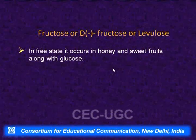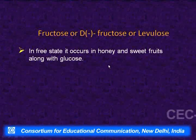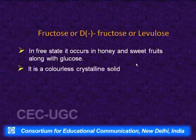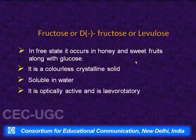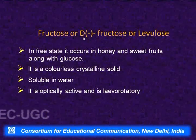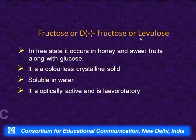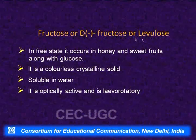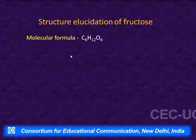Fructose occurs along with glucose in honey and sweet fruits. It is a colorless crystalline solid, soluble in water, and optically active. However, D-fructose is levorotatory despite belonging to the D-series, so it is called D-(−)-fructose. It was given the common name levulose, analogous to dextrose for glucose. Fructose is obtained along with glucose on hydrolysis of sucrose.